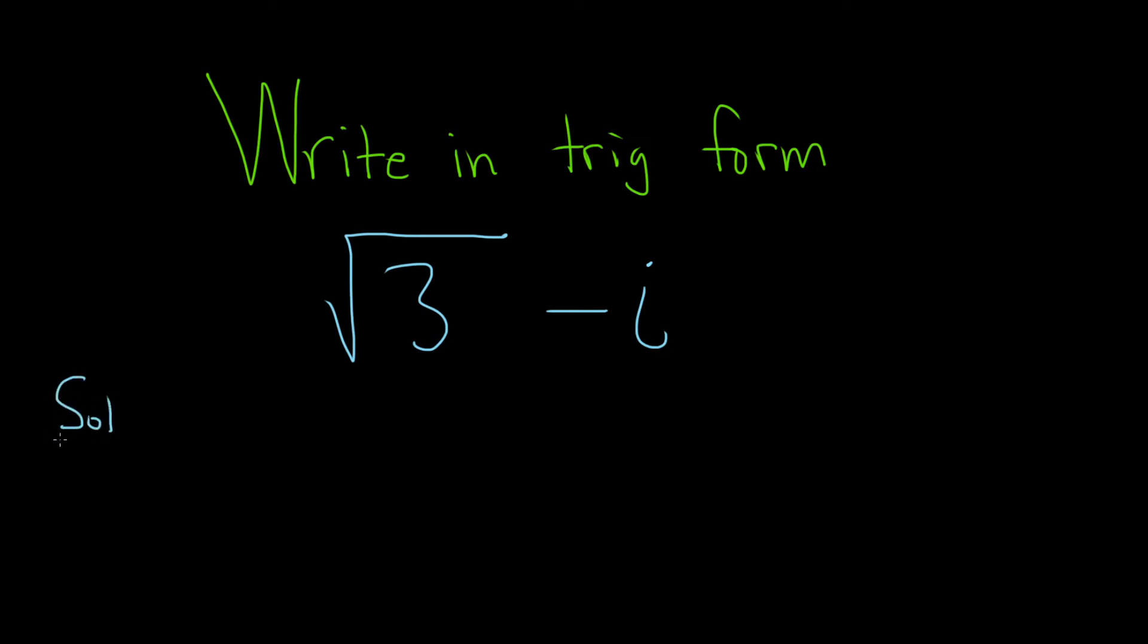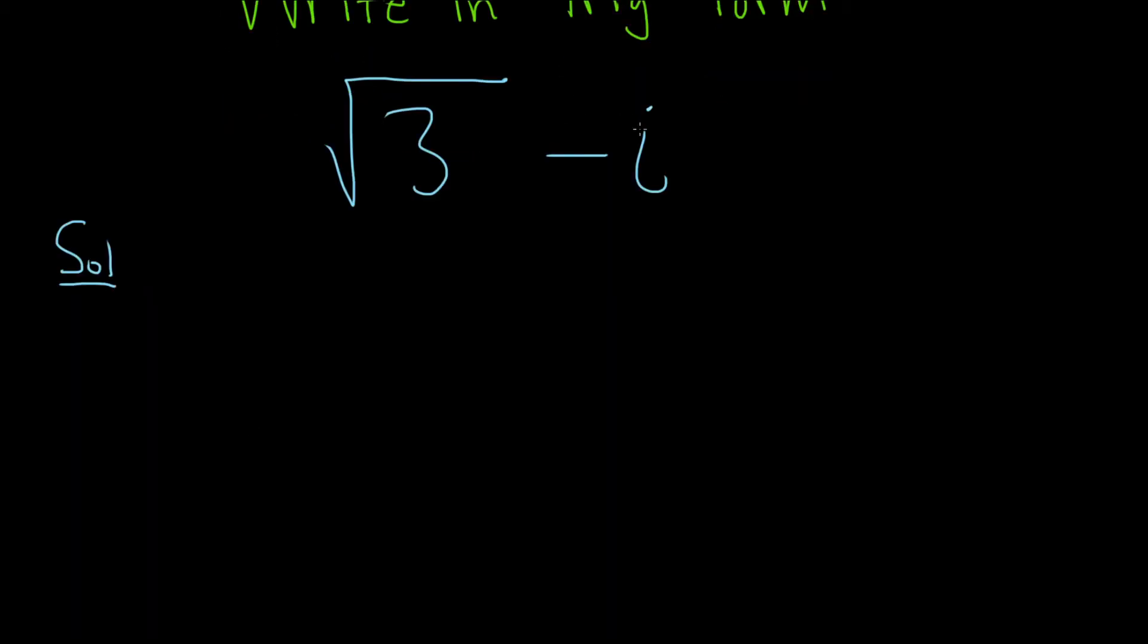Solution. So the first thing I like to do in these problems is to graph the complex number. So remember, there is a 1 here. So you can think of this complex number almost as an ordered pair, square root of 3, comma, negative 1. You can think of it that way.